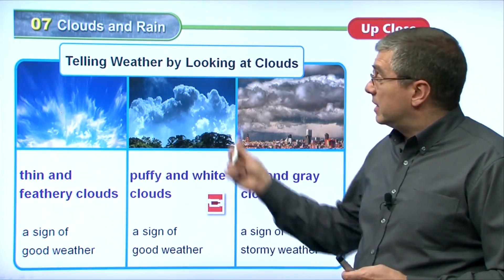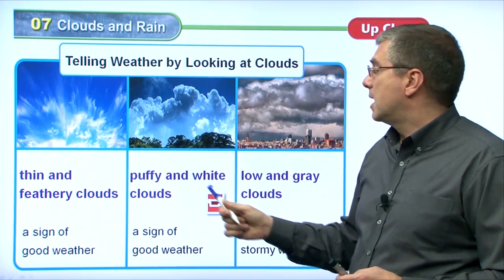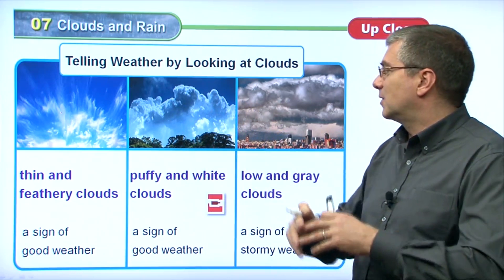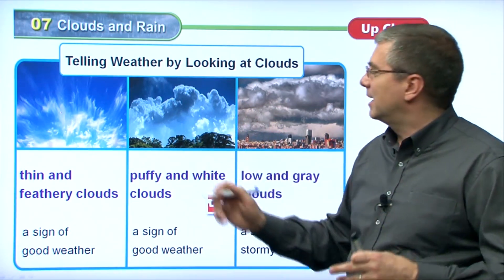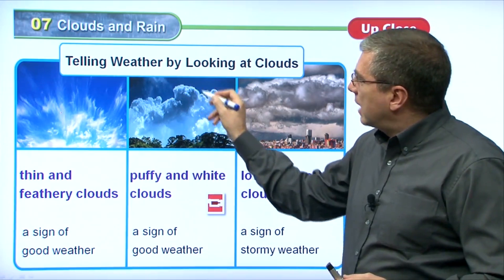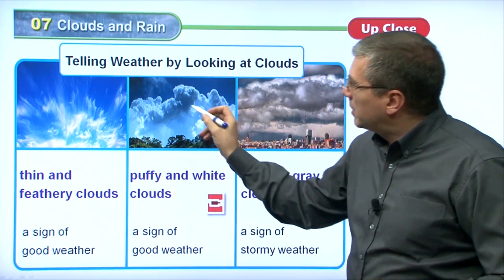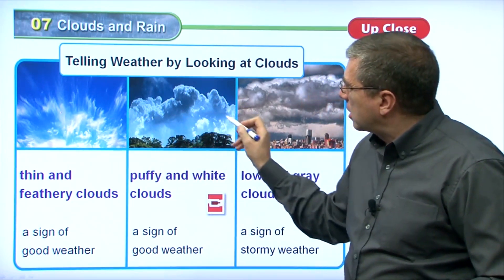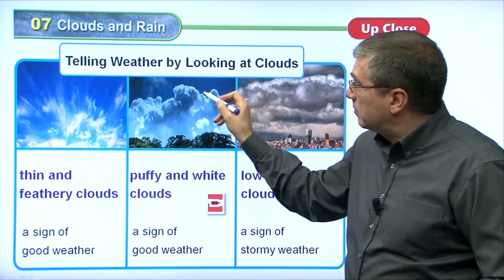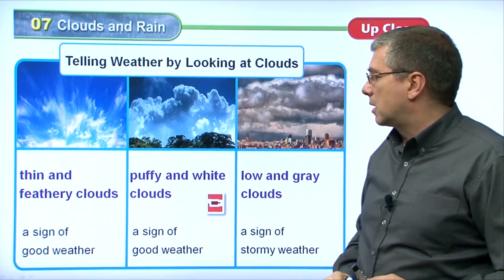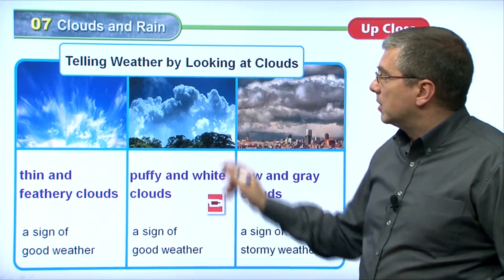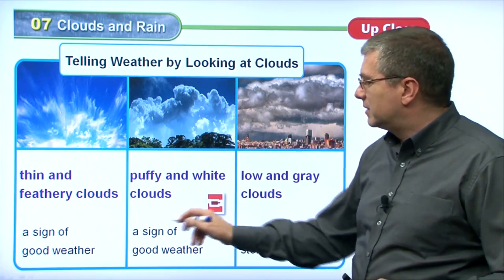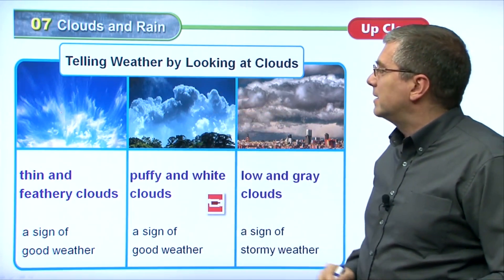Another type of cloud is puffy — like cotton candy or a teddy bear. Puffy and white clouds have the shape of white clouds, but they're also gray underneath where the sun doesn't hit them. They're very white where the sun hits them but a little darker underneath. This is also a sign of good weather, though it could change.